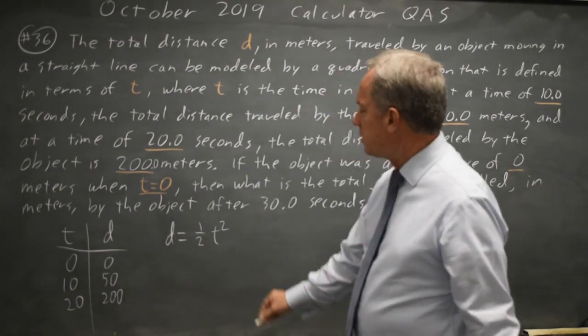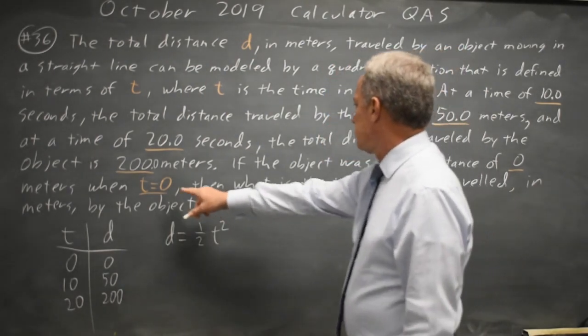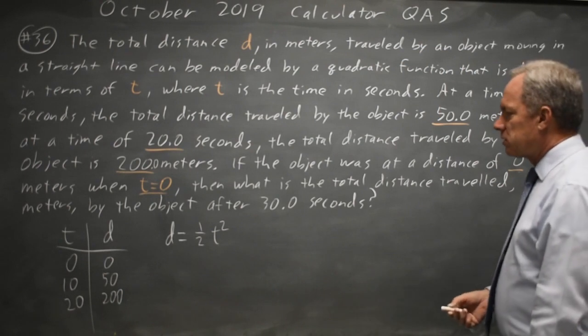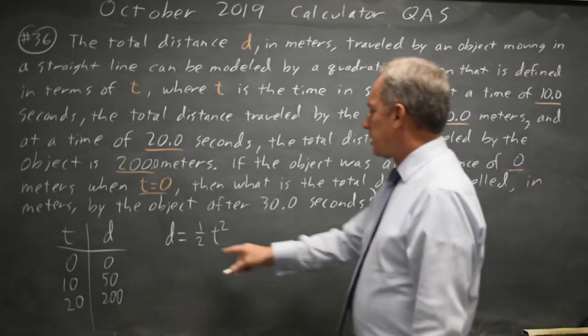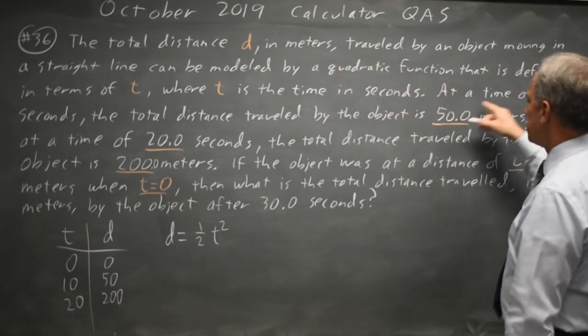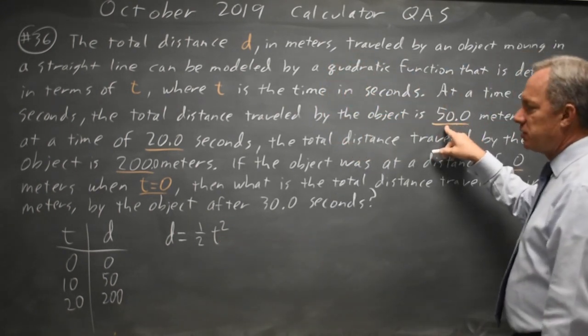And let's check that. At T equals 0, I get a distance of 0, which matches. At T equals 10, I get 1 half of 10 squared is 1 half of 100 is 50. And at 10 seconds, I do get 50 meters.